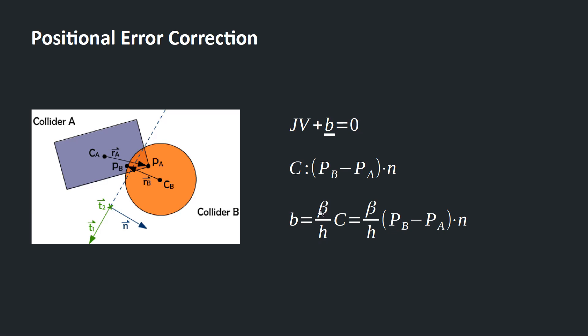Beta is a constant between 0 and 1. 0 means no correction at all. 1 means immediate and complete correction. Just how much we choose beta based on our desired rate of fixing the error will be the topic of our next presentation. Right now, just know that this is a value between 0 and 1, and it's a magic number. Multiply this vector with the positional constraint, this becomes our bias term.